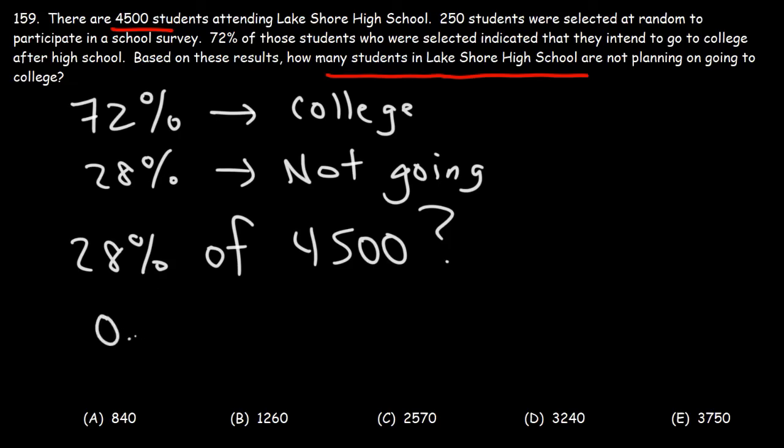All we need to do is take the decimal equivalent of 28%, which is 0.28, just take 28% divided by 100, and then take that number, 0.28 multiplied by 4,500. You should get 1260.